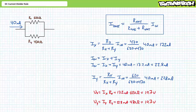In theory, current should be as easy to manipulate as voltage. However, in practice, the deployment of an ammeter to measure current in a real circuit is not nearly as easy as a voltmeter. The primary complication stems from an ammeter's requirement that it be placed in series with the element it is to measure current through. This necessitates the circuit be powered off, the circuit broken at its chosen point of insertion, the ammeter placed in series, and then the circuit powered back on. Often, a simple check with a voltmeter across a parallel circuit and Ohm's law is far easier and faster than using an ammeter and the current divider rule.